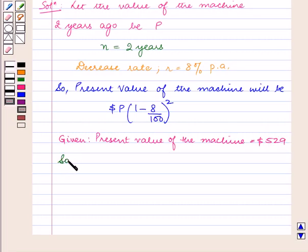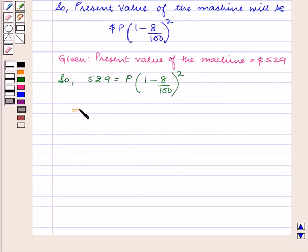So, 529 = P(1 - 8/100)^2, which implies P(100 - 8)/100)^2 = 529.